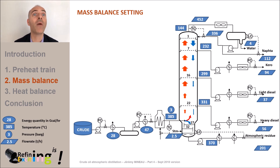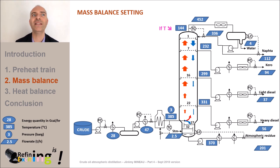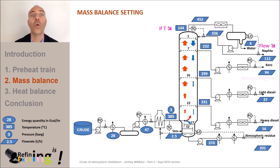What governs the minimum amount of naphtha that will be produced? If we lower this overhead temperature, we will produce a lighter kerosene cut, since we transfer the heaviest molecules of naphtha to the kerosene cut, which naturally become the lightest molecules of kerosene.